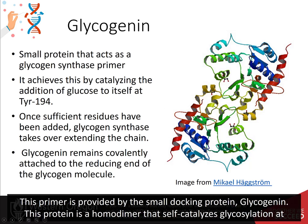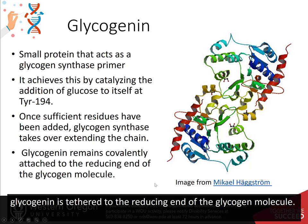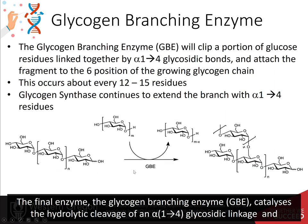This primer is provided by the small docking protein, glycogenin. This protein is a homodimer that self-catalyzes glycosylation at amino acid tyrosine-194. In this reaction, the hydroxyl group of tyrosine mediates nucleophilic attack on the anomeric carbon of UDP glucose. Thus, glycogen is tethered to the reducing end of the glycogen molecule.